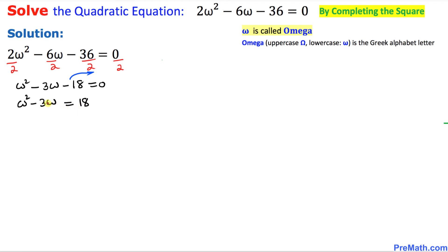The next step is, let's look at this middle part, the coefficient of omega, which is -3. Let's focus only on this 3. Don't worry about this negative sign.